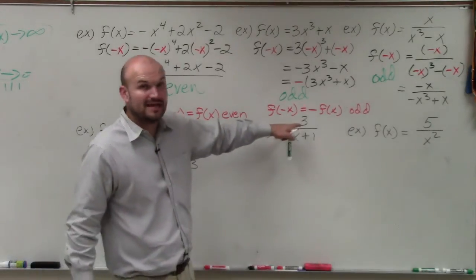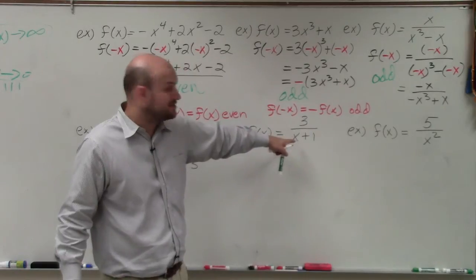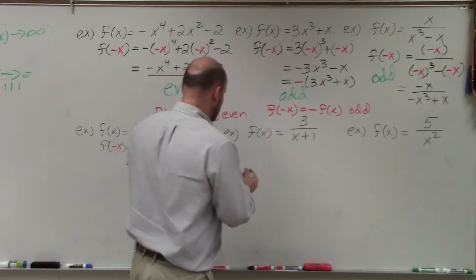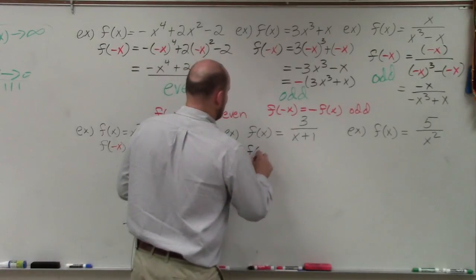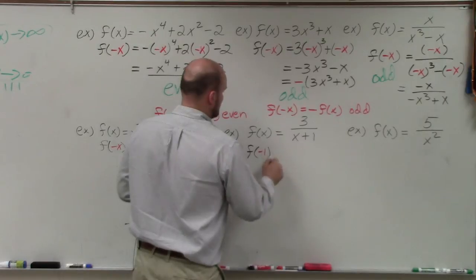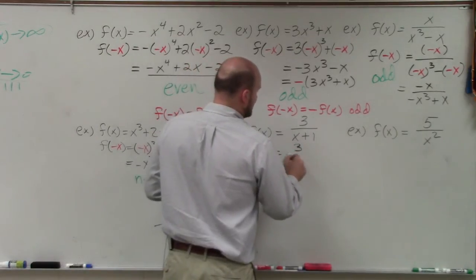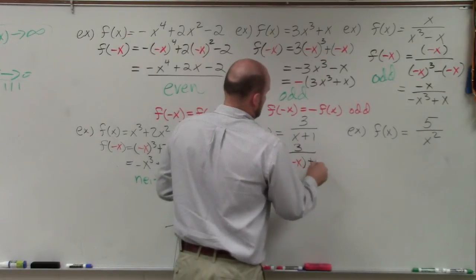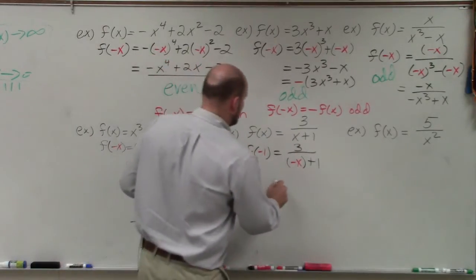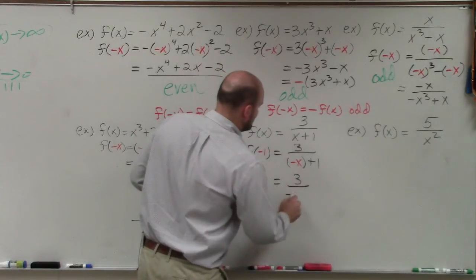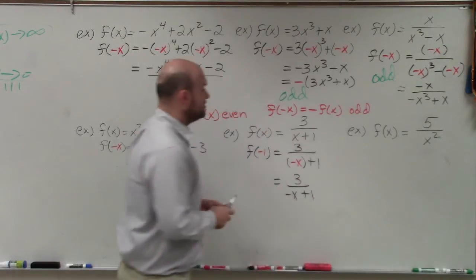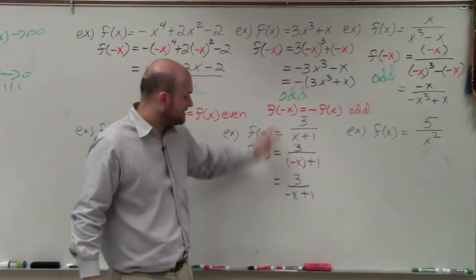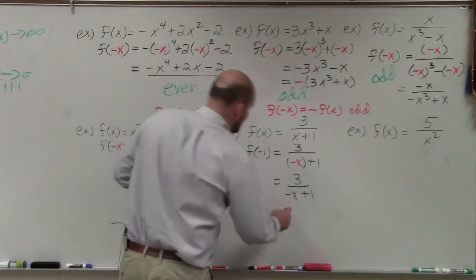In this example, I only have x to the first power. Some people might say it's odd, but let's evaluate it. f of negative x: there's nothing to plug in for 3, so I leave it. Then I have negative x plus 1. That gives me 3 over negative x plus 1, which is not the negation because not all terms are negated, nor is it exactly the same. So again, this is another example of neither.